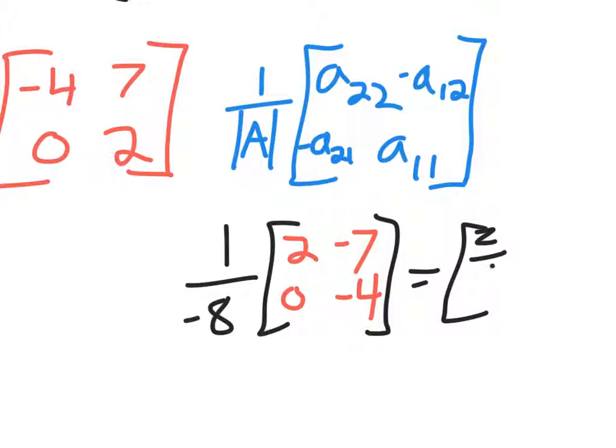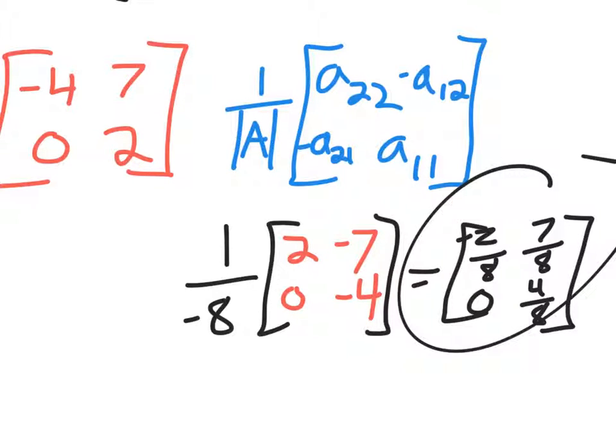So it's going to give you negative 2 over 8 because negative times a positive is a negative. That's 7 over 8. That's 4 over 8. And that's 0 here. That's your inverse. That's the final answer.